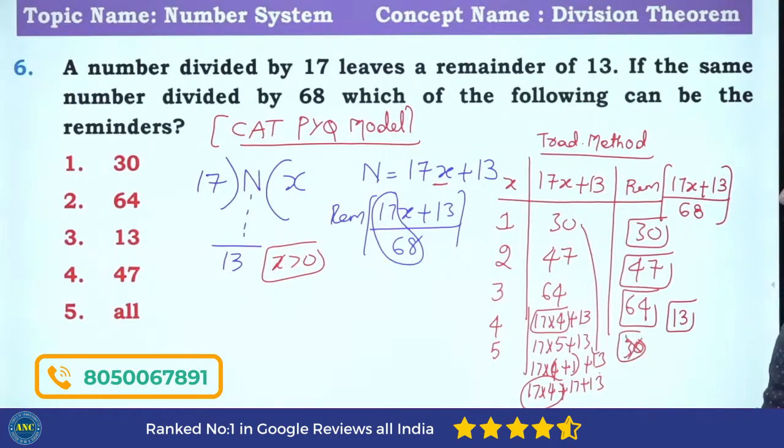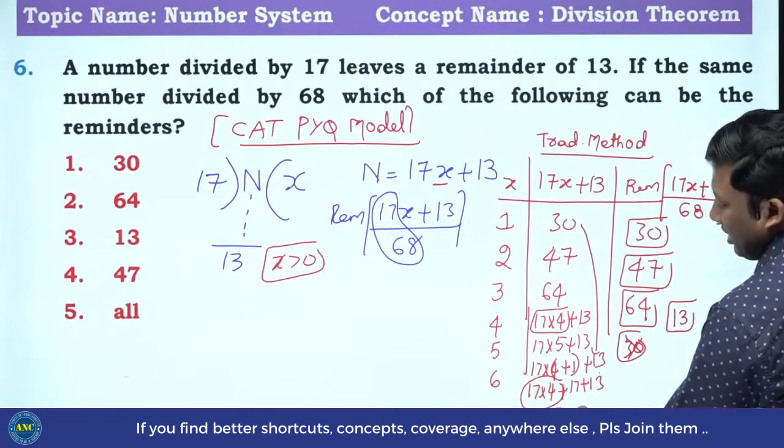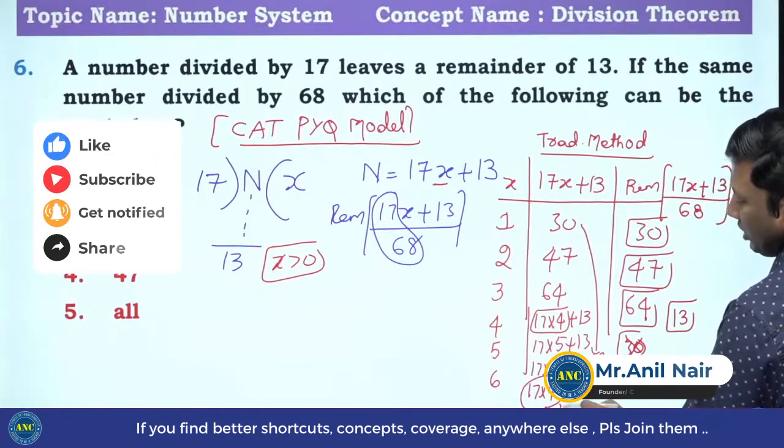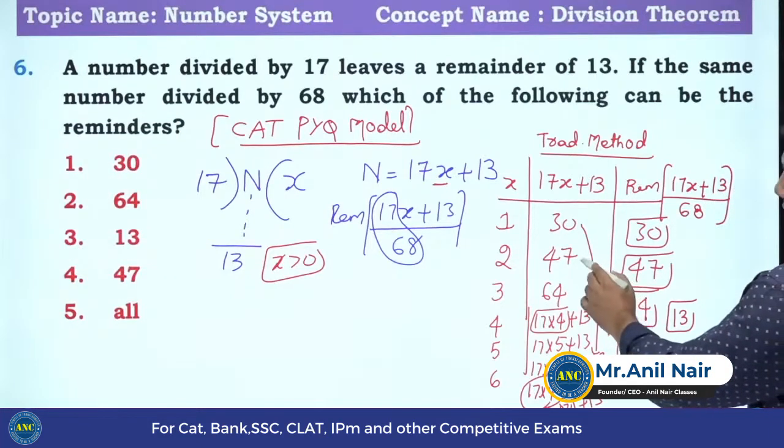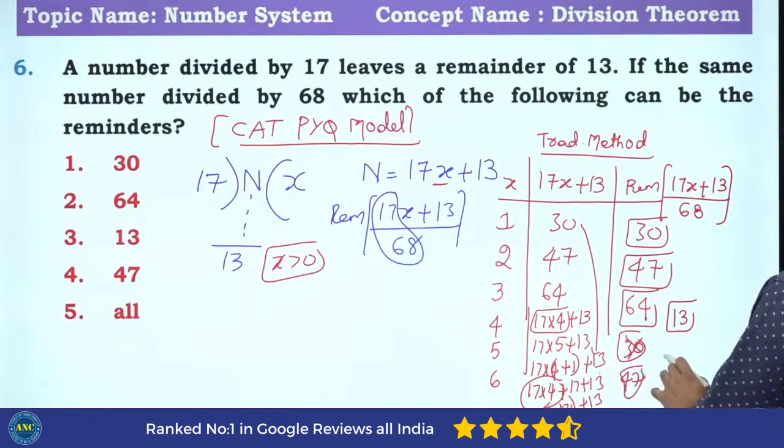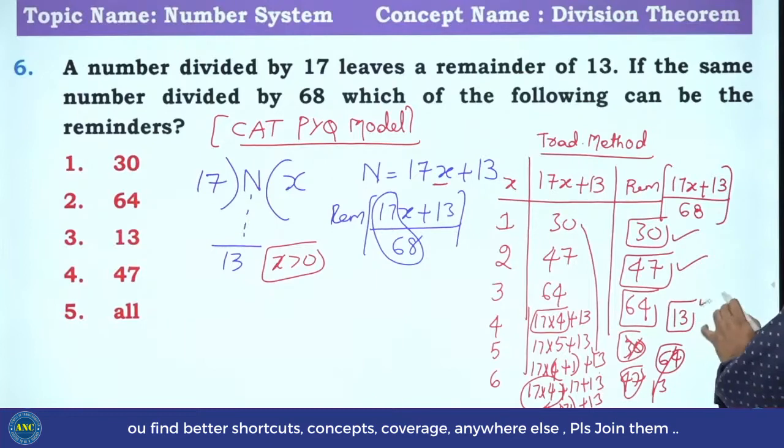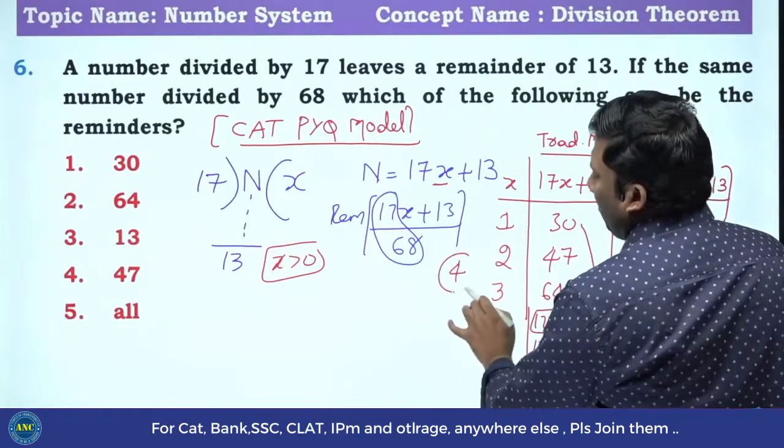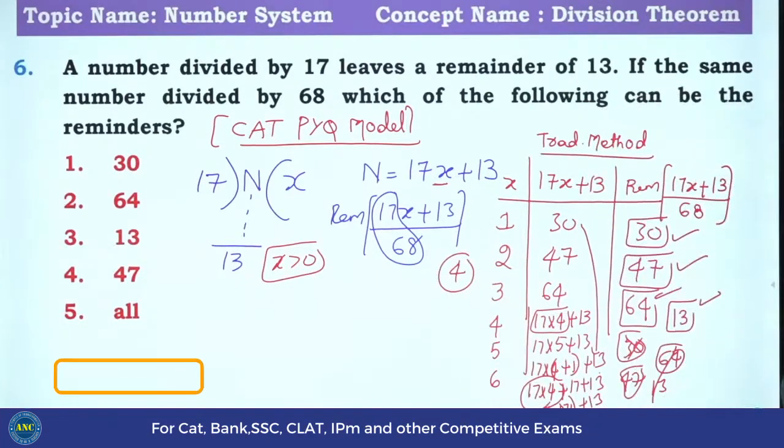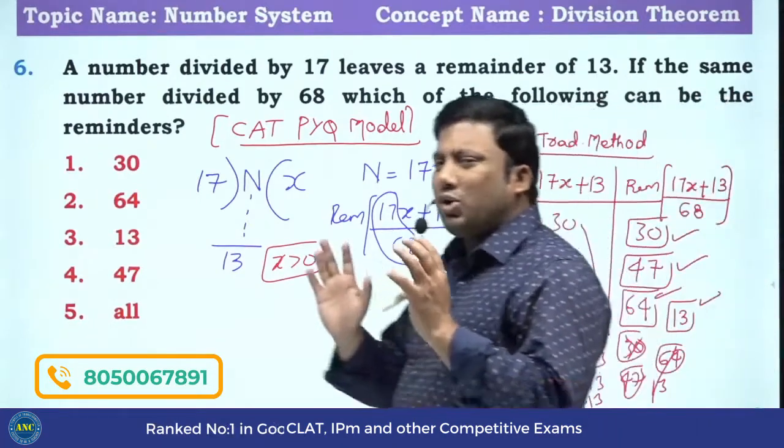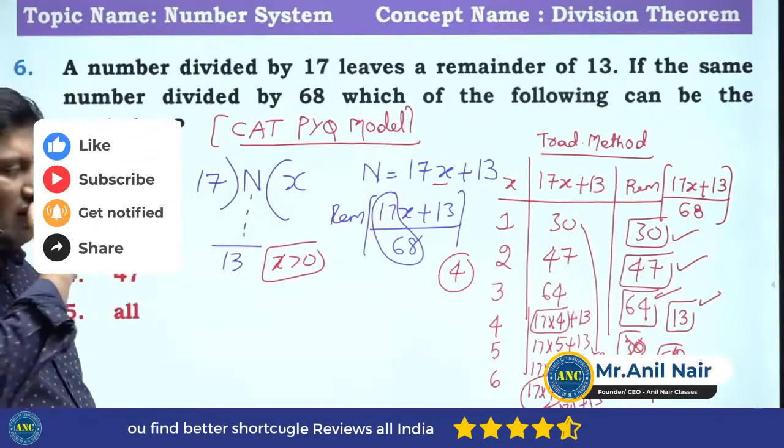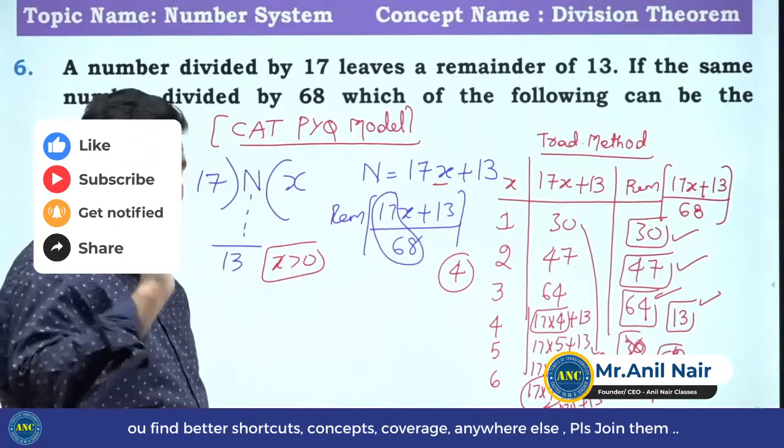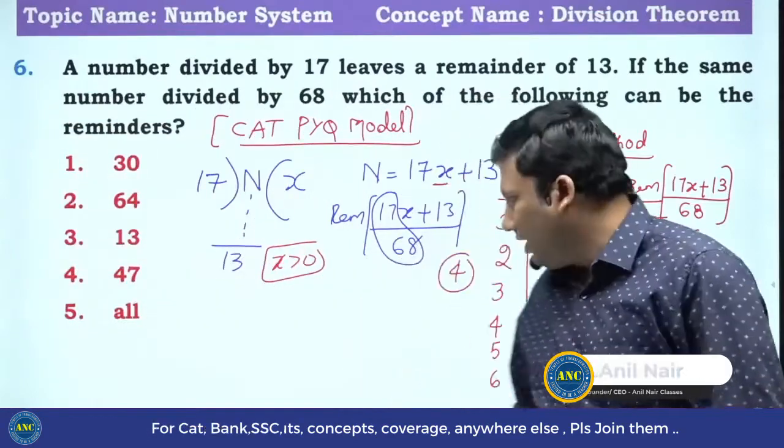I hope you are all there with me. It is 6. 6 can be written as 4 plus 2 plus 13. 17 times 4 is 68, 34 plus 2 is 47. So same thing you are getting 64 and 13. That means how many possible remainders it can have? 4. How many possible remainders it can have? 4. I hope it is clear. What is important to me is not for this substitution method. Substitution method is not what is important to me.